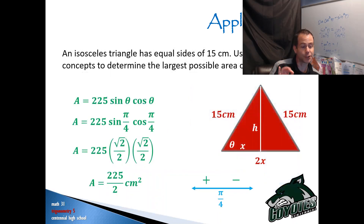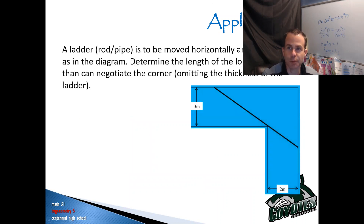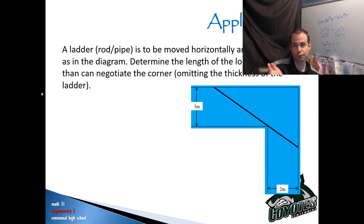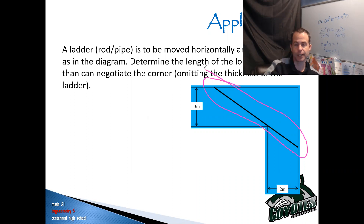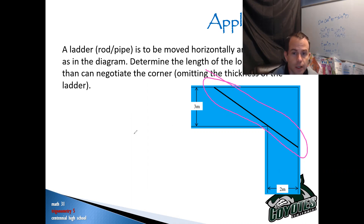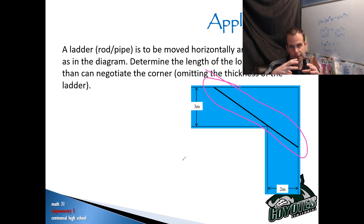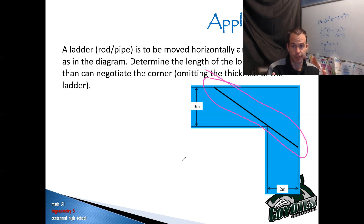So that was the first example. The second one: a ladder — or it could be a rod or a pipe — is to be moved horizontally around the corner as in the diagram. This thick line represents the object being navigated around the corner. Determine the length of the longest ladder that can negotiate the corner, omitting the thickness of the ladder. Calculus allows us to get into this layer of complexity, though the thickness would be a whole other layer we're not dealing with right now.